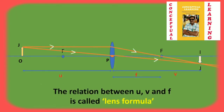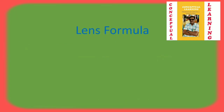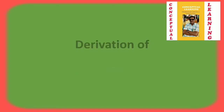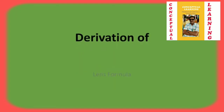The relation between U, V, and F is called the lens formula. Now we are going to derive the lens formula, which is 1/F = 1/V − 1/U.